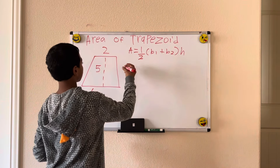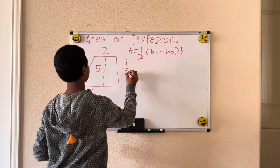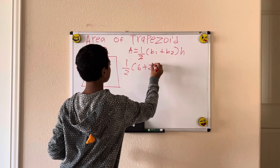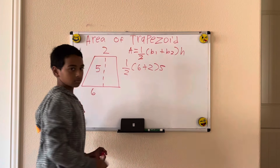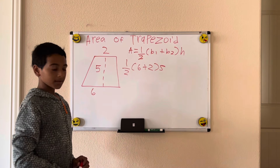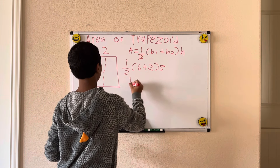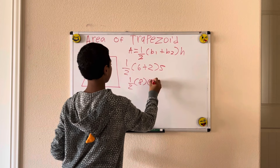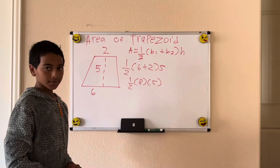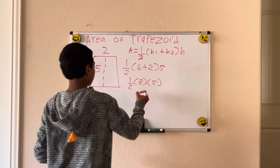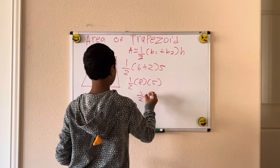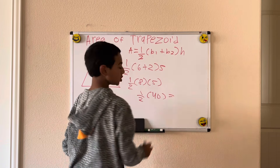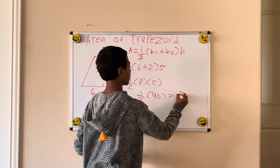So we'll get one-half times 6 plus 2 times 5, which simplifies to one-half times 8 times 5. We'll get one-half times 40, which equals 20.